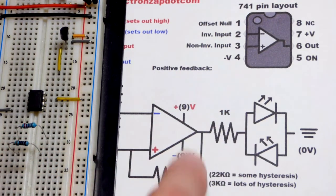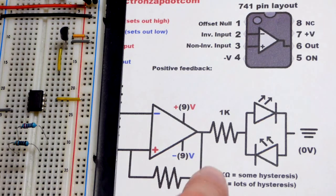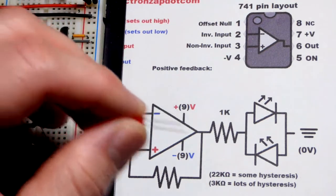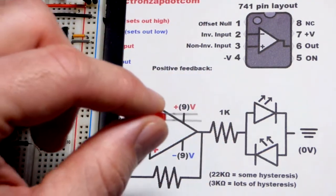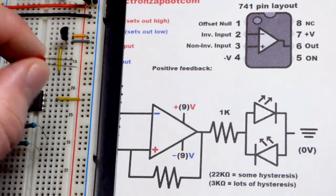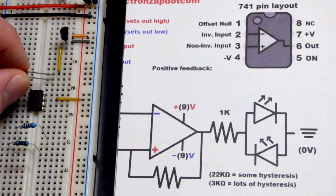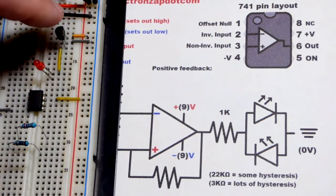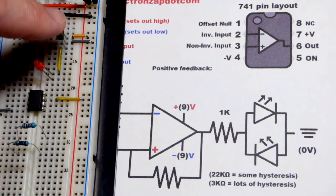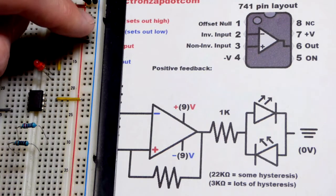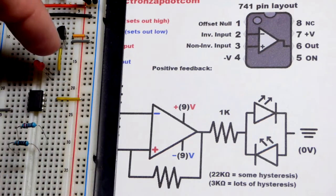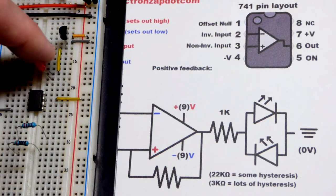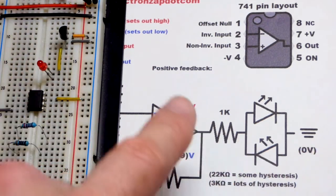I have the values written on there. Our positive feedback resistor depends on how much hysteresis we want. I'm going to use a red LED to know when the output is high. We're going to be using somewhat alternating current—the output will either be sourcing current to the red LED.